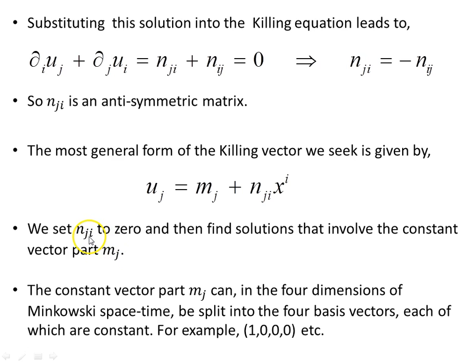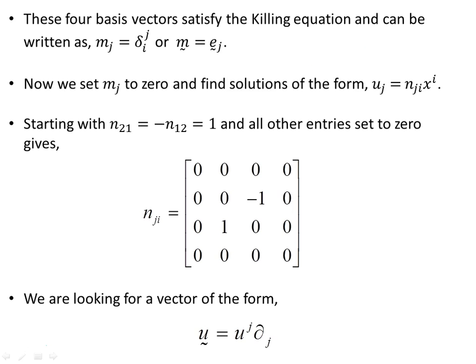Setting the anti-symmetric matrix part to zero, we find solutions involving just the constant vector part m_j. The constant vector m_j can in the four dimensions of Minkowski spacetime be split into four basis vectors, each of which are constant because it is a flat space. These four basis vectors satisfy the killing equation and can be written as m_j equals the Kronecker delta, or just m_j equals these unit basis vectors, constant everywhere in flat space.